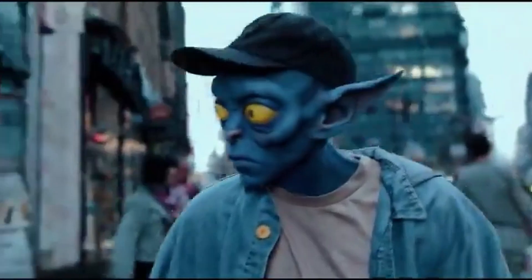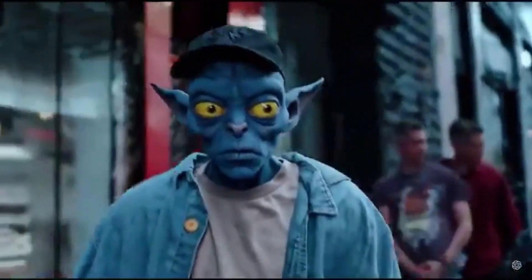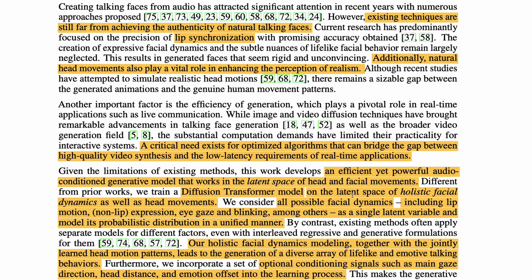OpenAI Sora was very realistic and people thought it might be 3D or trained with many different items, but OpenAI confirmed it's a diffusion transformer model. VASA similarly uses a diffusion transformer model on the latent space of holistic facial dynamics and head movements. It considers all possible facial dynamics — including lip motion, non-lip expressions, blinking — as a single latent variable and models their probabilistic distribution in a unified manner, instead of having separate models for each factor like existing methods do.